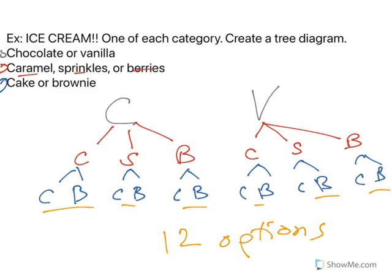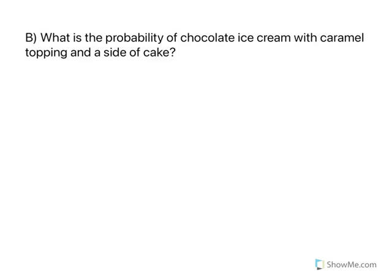So you can see how useful a tree diagram could be, right? But if we get to a lot of things, think if we had four, five, six, seven lines, how long this would be, right? Very, very, very crazy. Let's do a probability. Chocolate ice cream, caramel topping, side of cake. What's the probability? Well, we know we have 12 total.